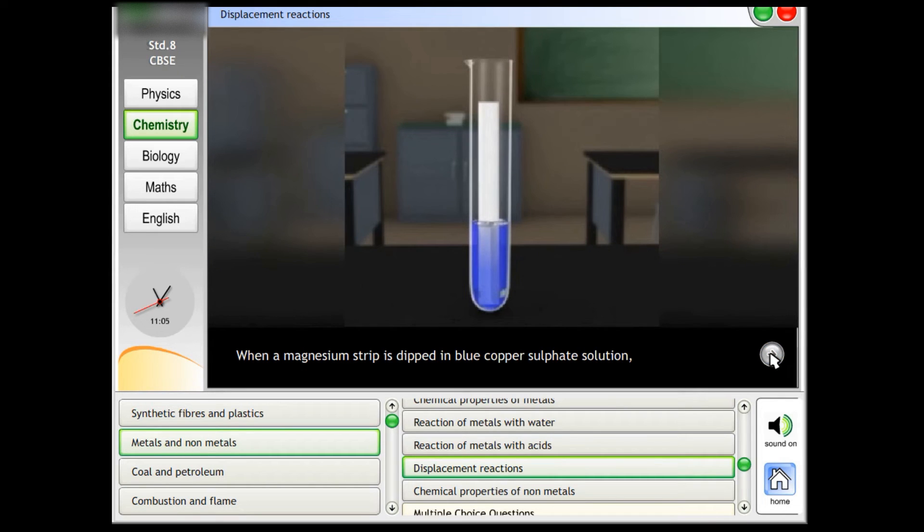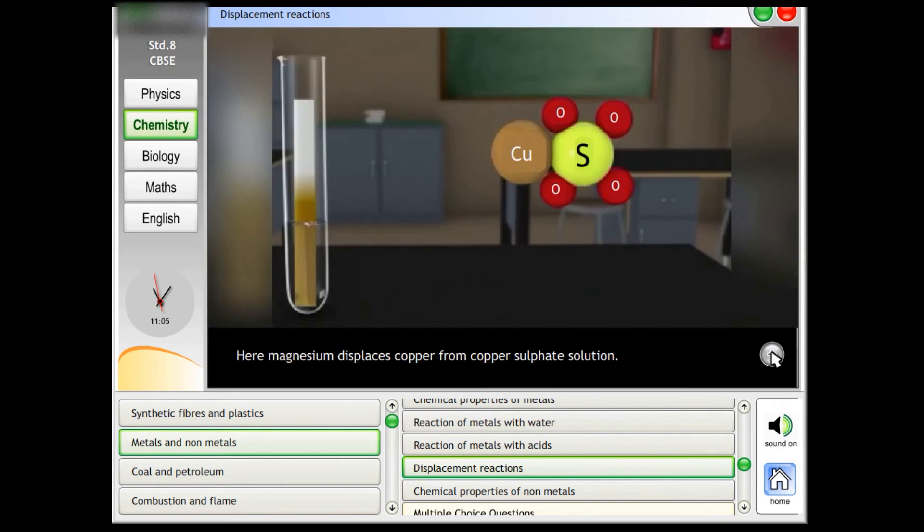When a magnesium strip is dipped in blue copper sulphate solution, the copper sulphate solution becomes colourless and the magnesium strip becomes brown. Here magnesium displaces copper from copper sulphate solution.